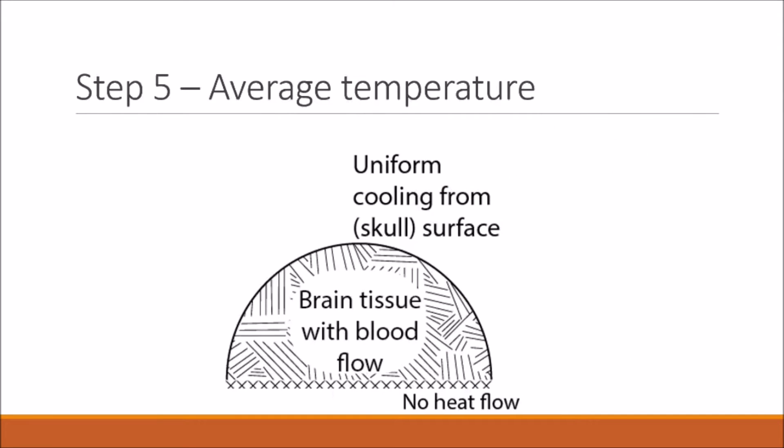The problem also asks us whether the average temperature of the brain can ever reach 30 degrees Celsius or less. Well, we know that our brain is at steady state. And we know that heat is constantly being generated within the brain. So in order for the brain to be at steady state, heat needs to constantly be lost through the surface of the brain. And in order for that to happen...